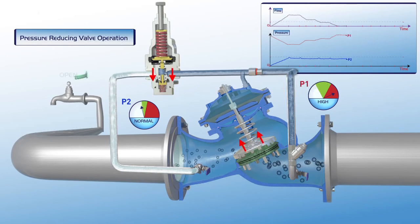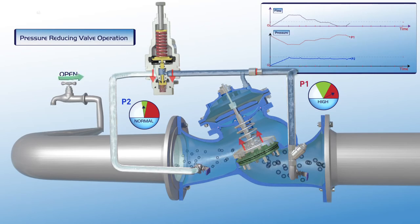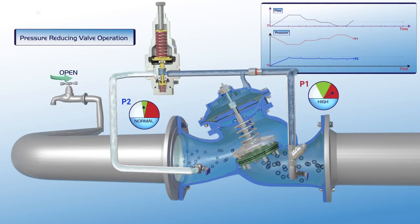When demand increases again, the pilot responds relative to demand level. The plunger moves downwards, the valve gradually opens, and downstream pressure remains stable.